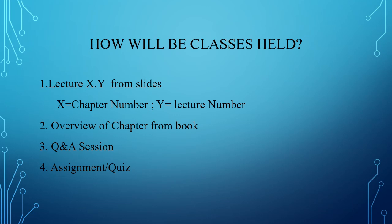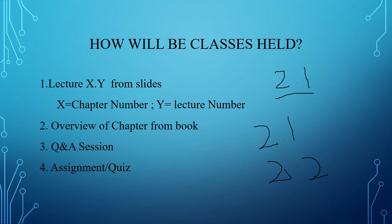As you saw on the first slide, lectures are labeled in the format lecture X.Y, where X shows the chapter number and Y shows the lecture number within that chapter. For example, lecture 2.1 means chapter 2, lecture 1. There will be multiple lectures for a single chapter.